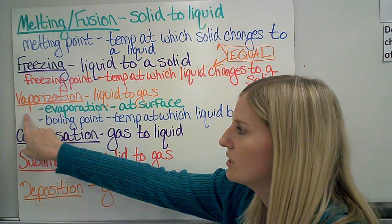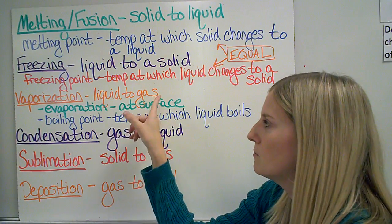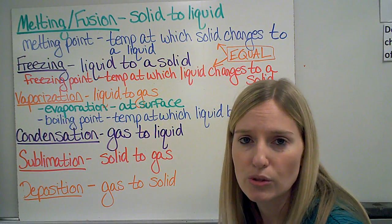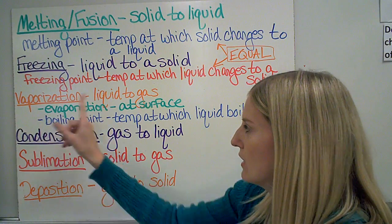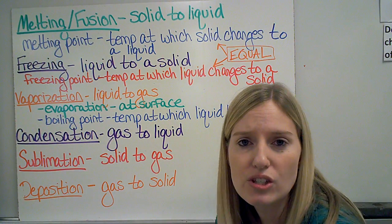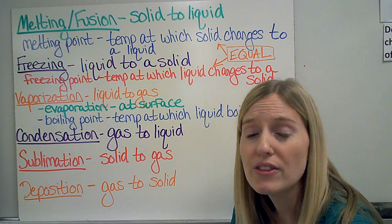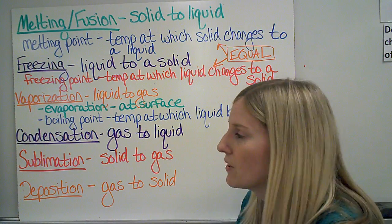Vaporization is what we call it when a liquid becomes a gas, and that can happen in two ways. Either the substance can evaporate, which means that happens at the very surface of the liquid — like on the surface of a puddle, for example.